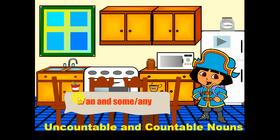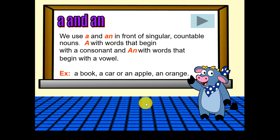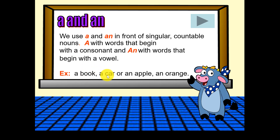So we're going to learn about a or an, some or any. The first rule is we use a or an in front of a singular countable noun. For example, these are countable: a book, a car, an apple, an orange.